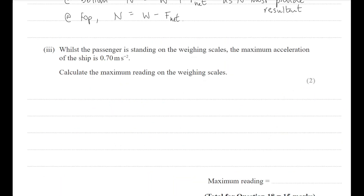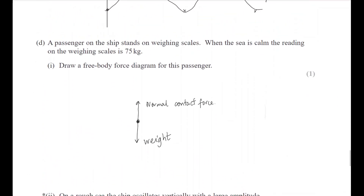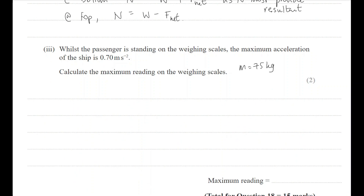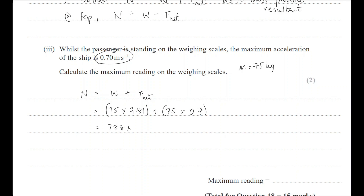The final calculation: the passenger is 75 kg and the maximum acceleration is 0.7 m/s². The maximum scale reading occurs at the bottom of the oscillation: N = W + F_resultant = (75 × 9.81) + (75 × 0.7) = 788 N. Since scales typically read in kilograms, divide by 9.81 to get 80.4 kg. So even though the passenger is 75 kg, at the bottom of the oscillation the scale reads 80.4 kg.